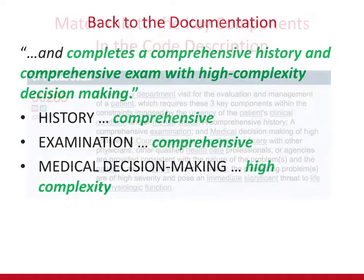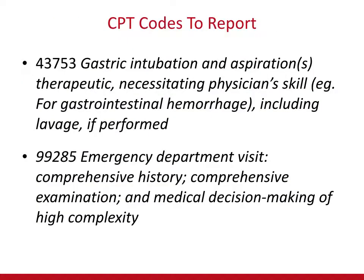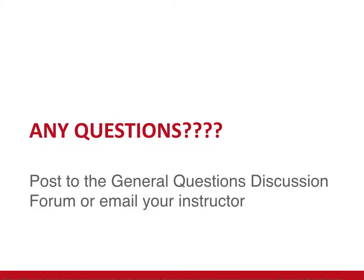Now we can match those three levels — comprehensive history, comprehensive examination, and medical decision-making of high complexity — and that's included in the description for 99285. So you can report these two codes, 43753 and 99285, with confidence that you are correct and accurate and have covered everything documented in this scenario. If you have any questions, post to the General Questions Discussion Forum or email your instructor.